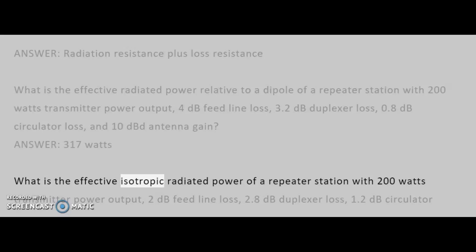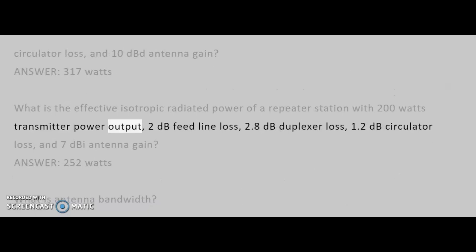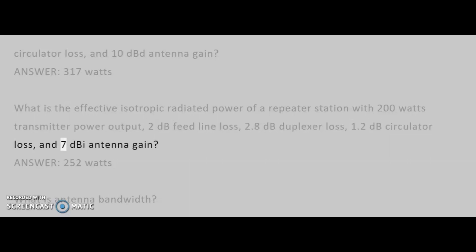What is the effective isotropic radiated power of a repeater station with 200 watts transmitter power output, 2 dB feed line loss, 2.8 dB duplexer loss, 1.2 dB circulator loss, and 7 dBi antenna gain? Answer: 252 watts.